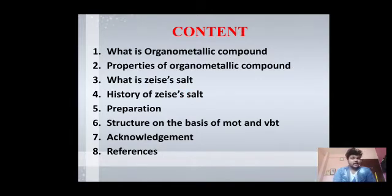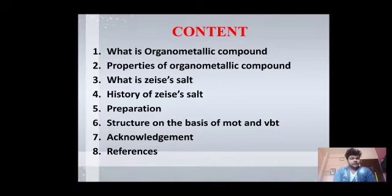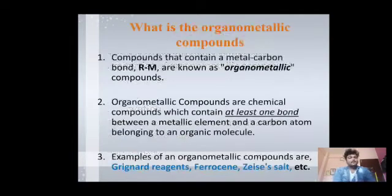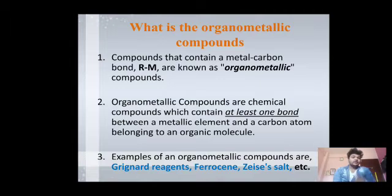The contents include: first, what is an organometallic compound; second, properties of an organometallic compound; what is Zeise's salt; history of Zeise's salt; what is the preparation; then the main part — structure on the basis of MOT and VBT; and acknowledgement. Now we will see what an organometallic compound is before going to Zeise's salt.